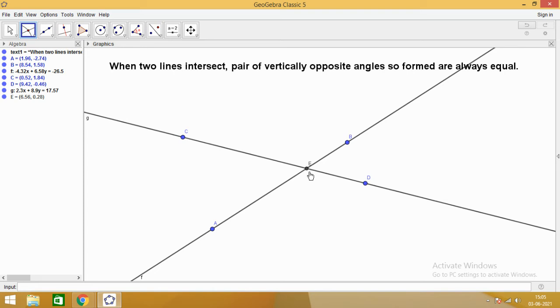So observe that when two lines intersect, we get four angles. So here you can see that we have angle BEC, angle CEA, then angle AED and angle DEB and all are around this point E.